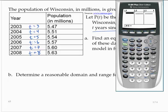Let's type in the new data: 3, 4, 5, 6, 7, 8. And to the right, 5.47, 5.51, 5.54, 5.57, 5.60, and 5.63.